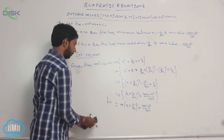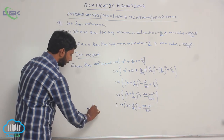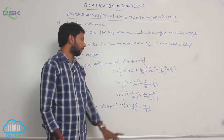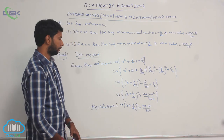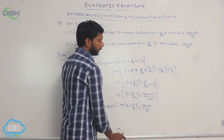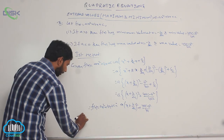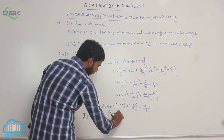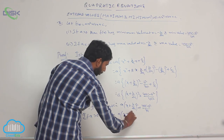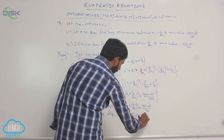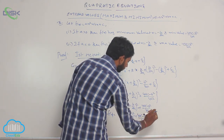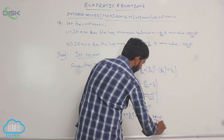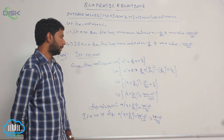Therefore f(x) equals ax² + bx + c equals a·(x + b/2a)² plus (4ac minus b²) by 4a. So if a is greater than 0, that implies f(x) equals a·(x + b/2a)² plus (4ac minus b²) by 4a, which is greater than or equal to (4ac minus b²) by 4a.